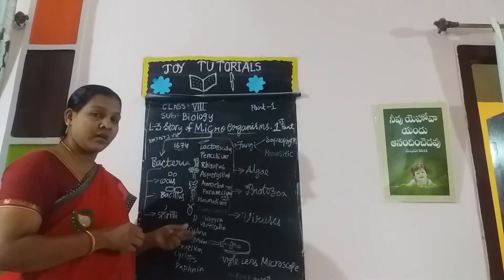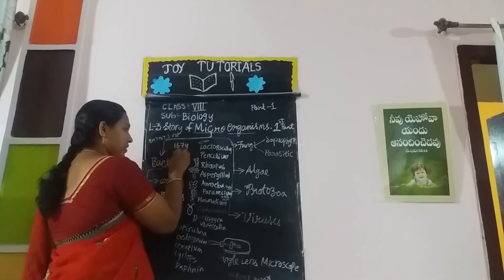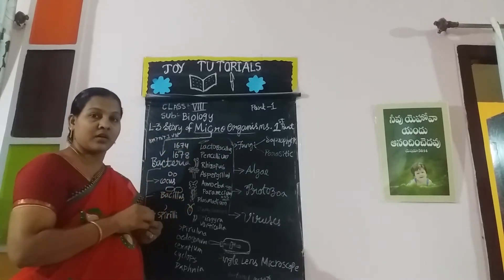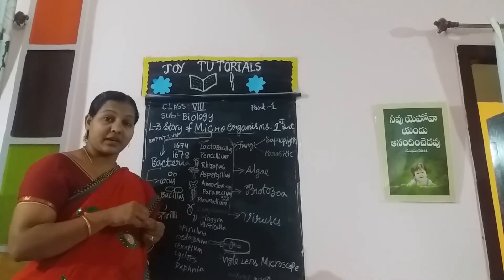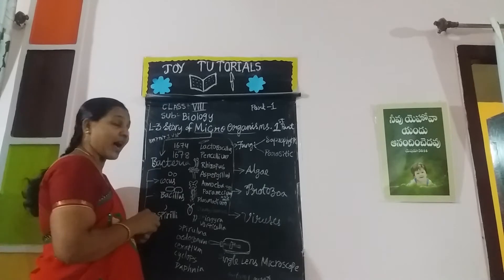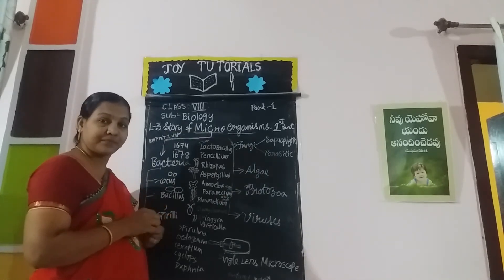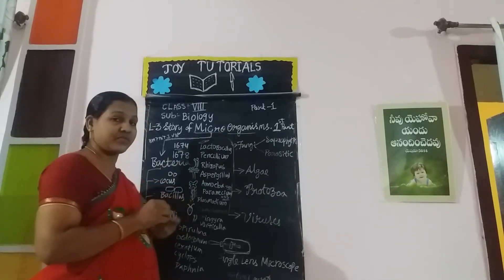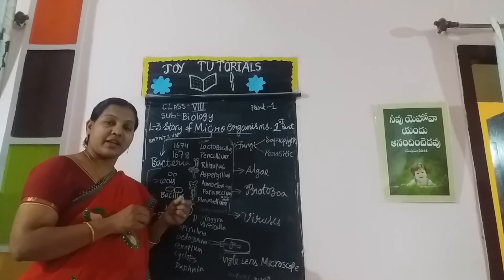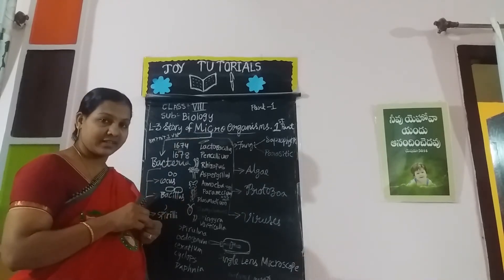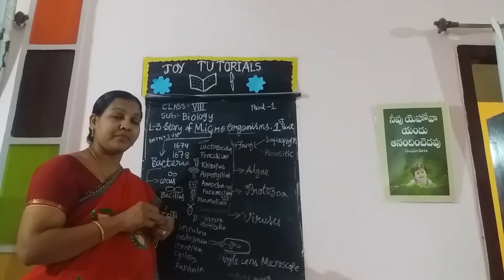In 1678, he observed several microorganisms — tiny organisms moving around in water. He noticed them and called them 'animalcules,' which he later renamed bacteria. He observed them through his skin observations and called them 'animal cues,' and that name was later changed to bacteria.